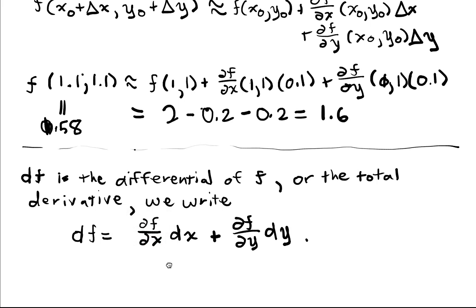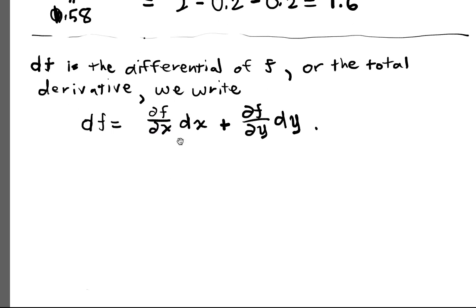Now, there's one last thing that we should observe, is that in this approximation, right, so we have this approximation, f of x-naught, y-naught, plus df/dx of x-naught, y-naught dx, plus df/dy x-naught, y-naught. Well, we can also write that as f x-naught, y-naught.